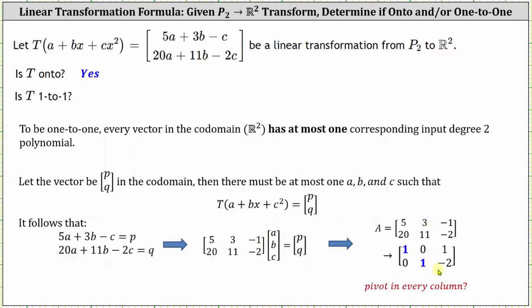But I want to pause here just for a moment because we're checking to see if there's a pivot in every column. If the transformation matrix is a 2 by 3 matrix, meaning the number of columns is more than the number of rows, then there's no way the transformation can be 1 to 1. And looking at our work does verify this. Notice how we have pivots in column 1 and column 2, but not column 3, which indicates the transformation is not 1 to 1.